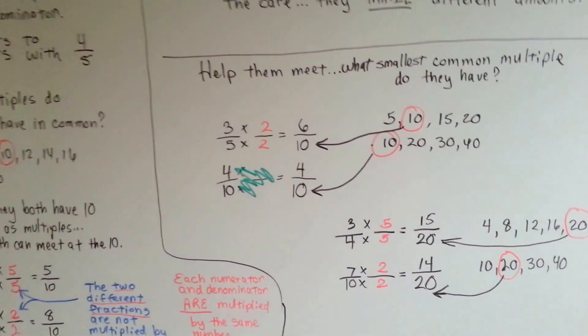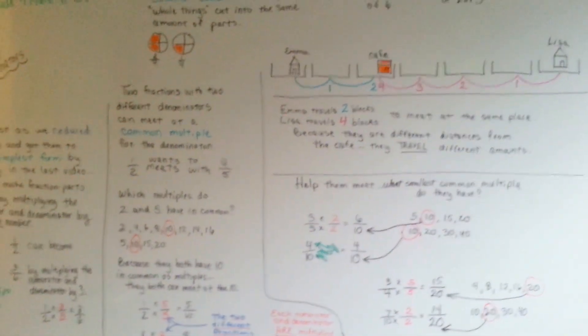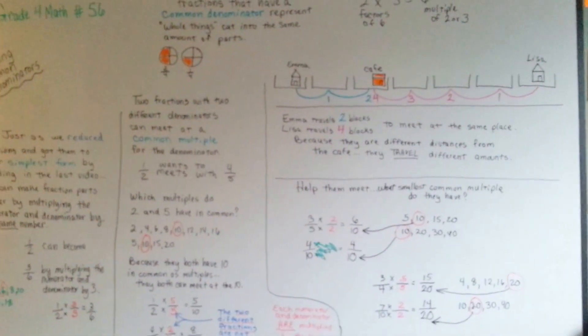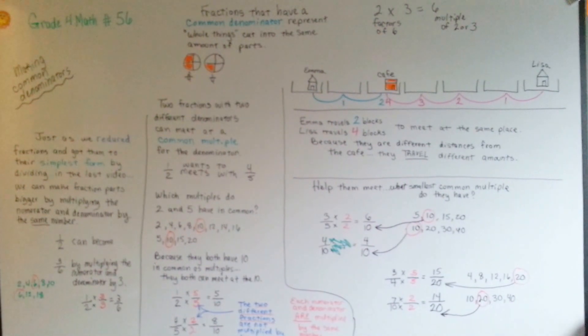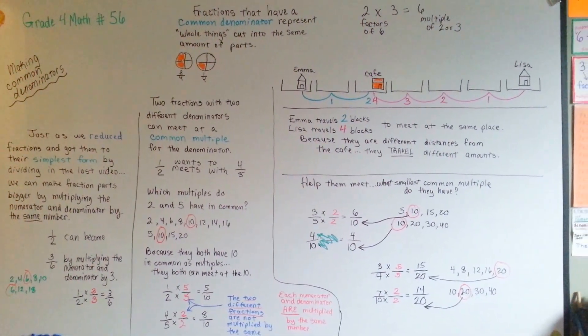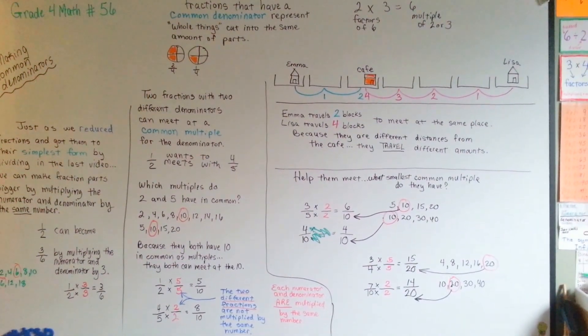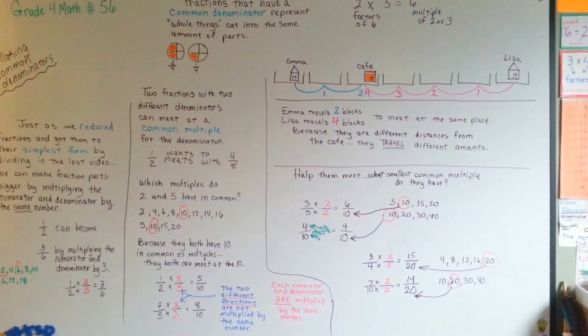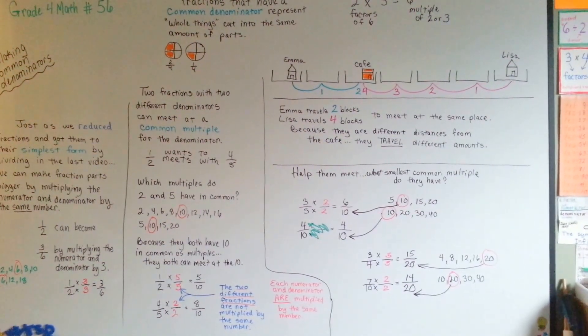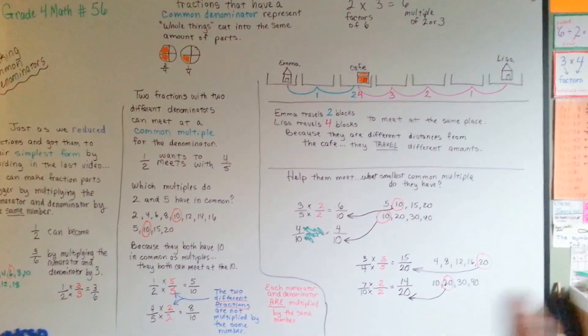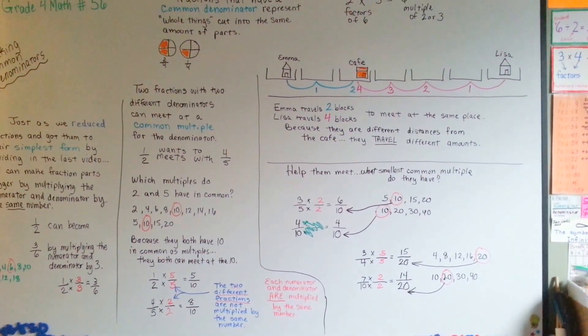Just as we were able to make a fraction smaller by dividing, we can make a fraction bigger by multiplying. Just make sure you multiply the top and the bottom, the numerator and the denominator, by the same number. Just like when you're dividing, you would divide the numerator and denominator by the same number. That is how you make common denominators. You multiply and look for multiples so they know whose friend's house they can meet at. Whether they're staying home and the friends are coming over, or if they have to travel a distance to get to the place they're meeting at. See you next video. Bye!